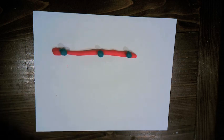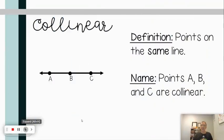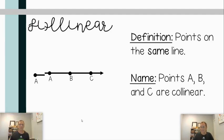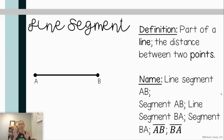You can see the lines here in the diagram. Points A, B, and C are all on this line. You could call this line AB, or line AC, or line CB — you have lots of options to name this line. However, points A, B, and C are called collinear because they all are on the same line.